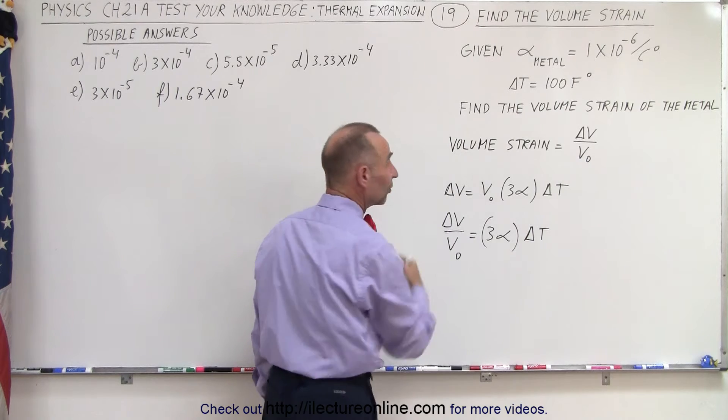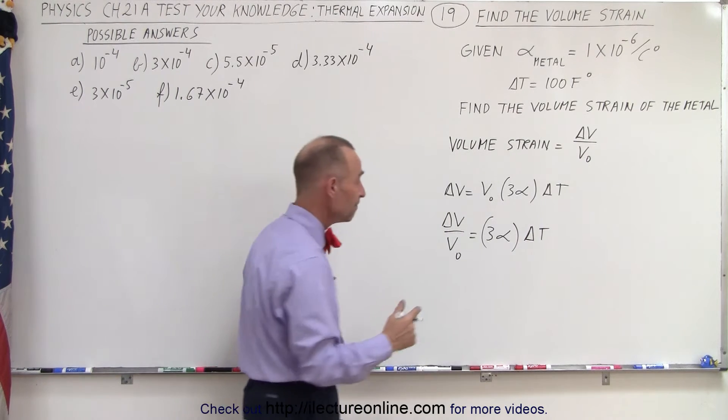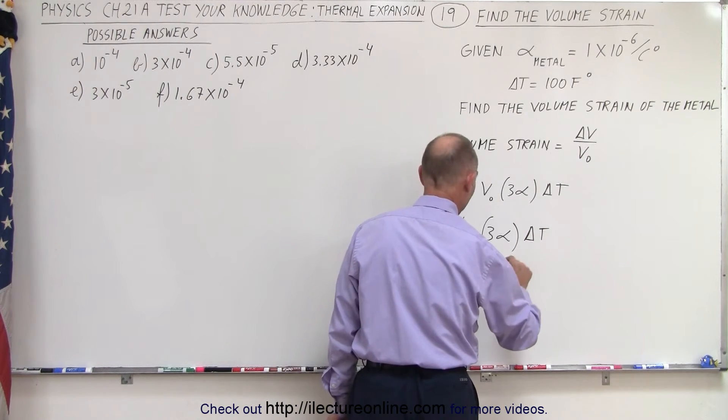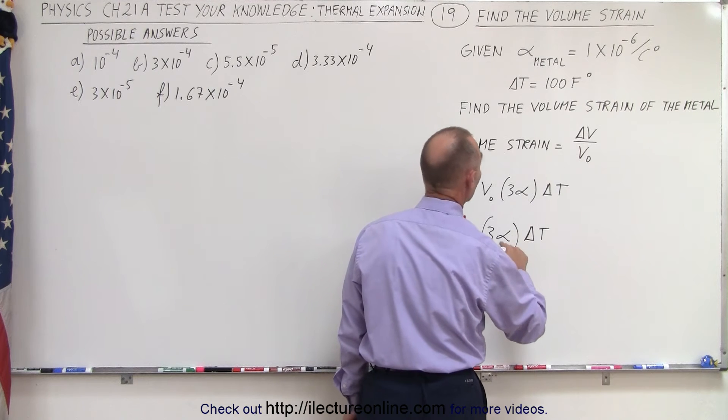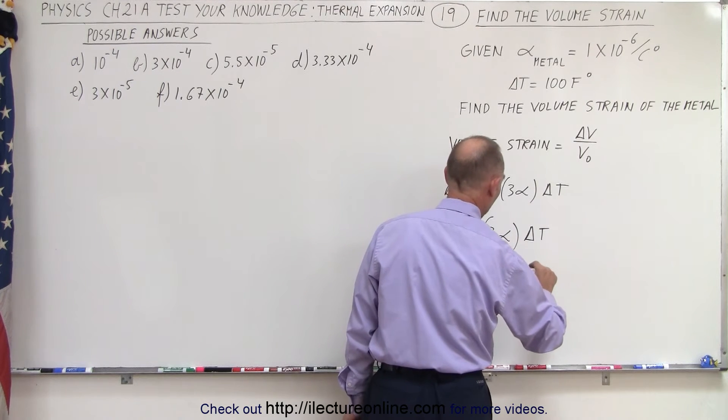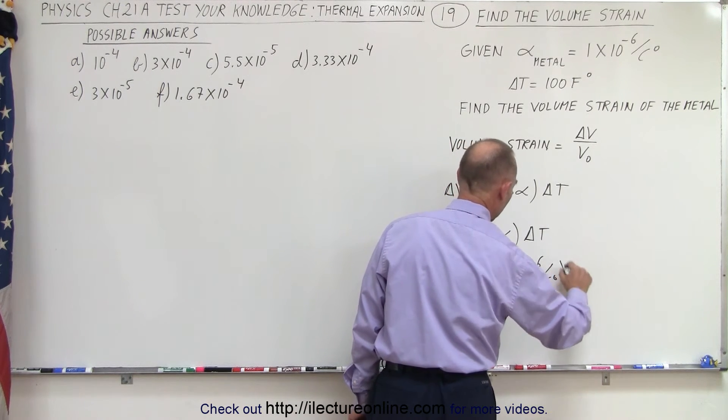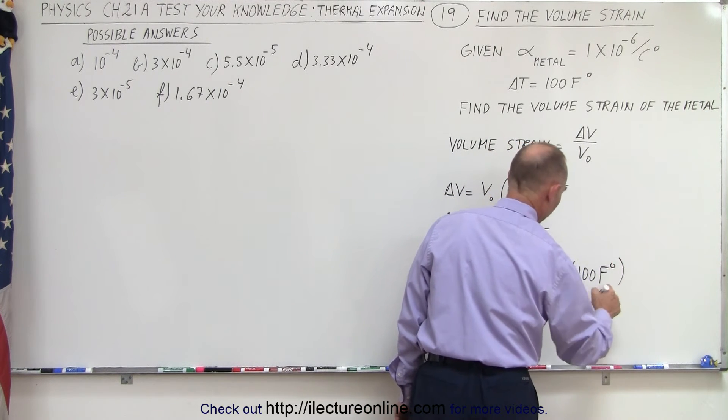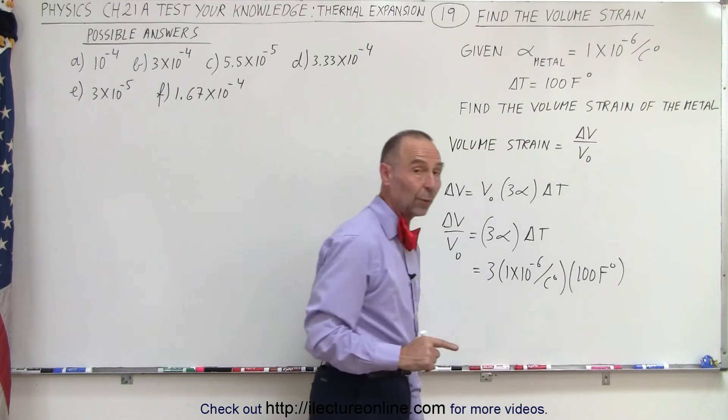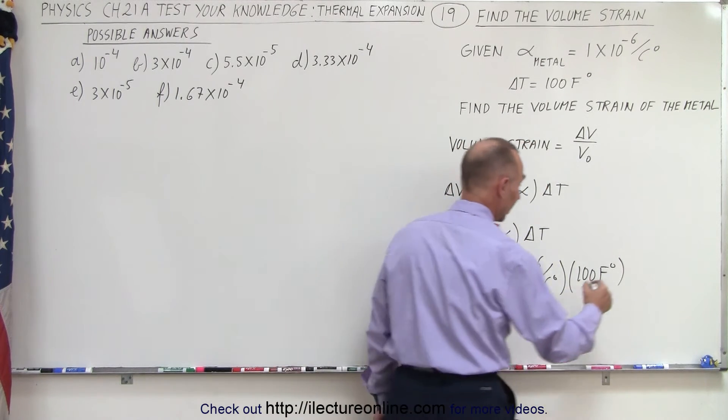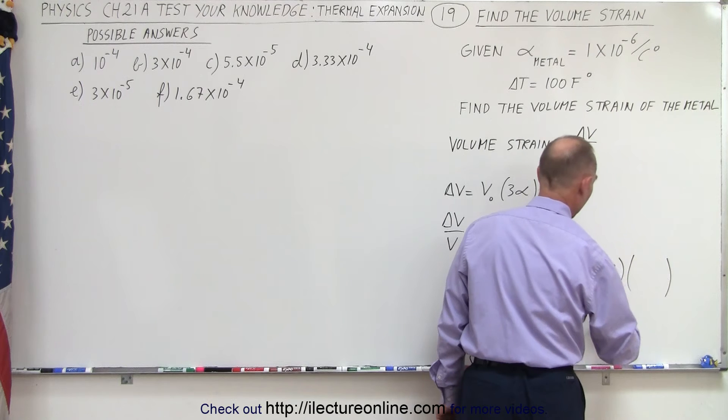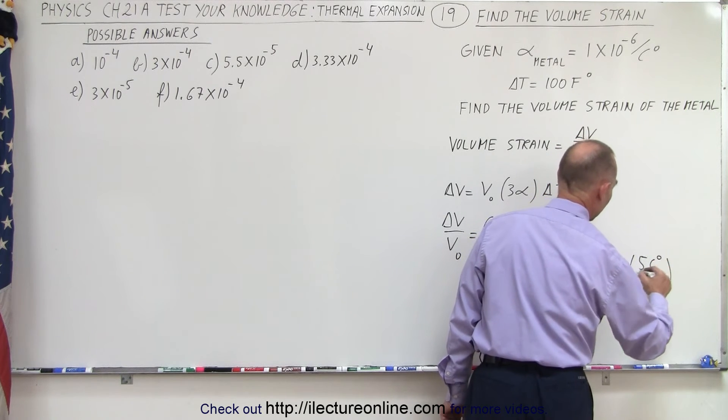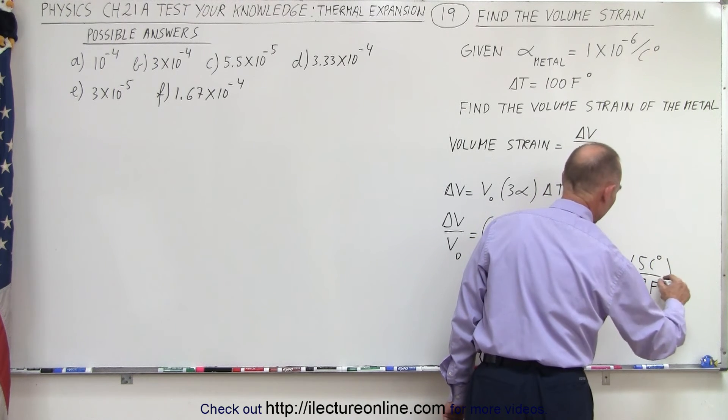That would then give us the correct answer. So let's see. This would be equal to three times the linear coefficient of expansion, which is 1 × 10^-6 per centigrade degree, times 100 Fahrenheit degrees. Of course those don't coincide with one another, so we have to convert from Fahrenheit degrees to centigrade degrees, and it would be five centigrade degrees for every nine Fahrenheit degrees.